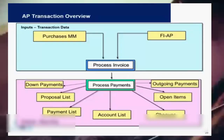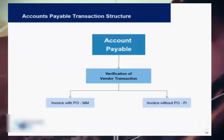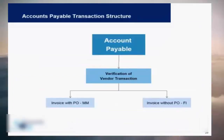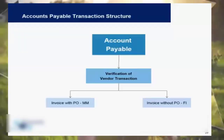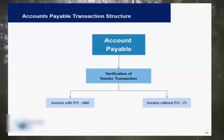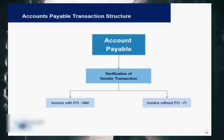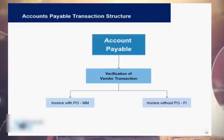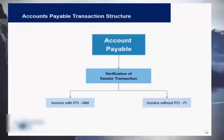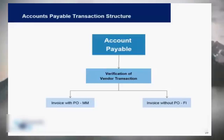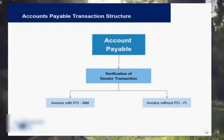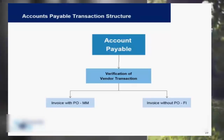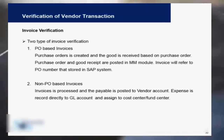Accounts payable basically involves verification of vendor transactions. Invoicing is done in two different ways: invoicing can be done using a purchase order on the MM side, or invoicing can be done without a purchase order, directly in finance. In both cases a finance invoice document is always created, but in the first case the finance document is created via MM, whereas in the second case the finance document is directly and manually created.